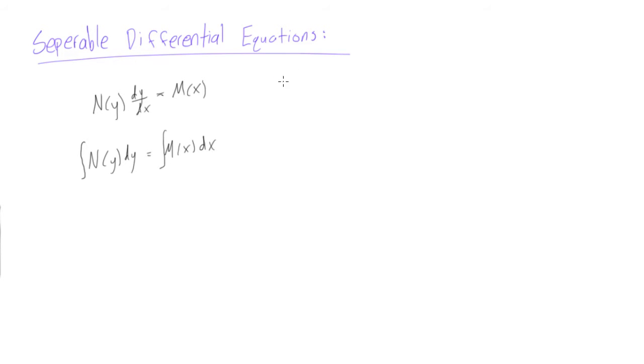Another way that these are commonly written is we have dy/dx is equal to m(x) over n(y). All they've done here is just divided both sides by n(y), but often you see it written like this.